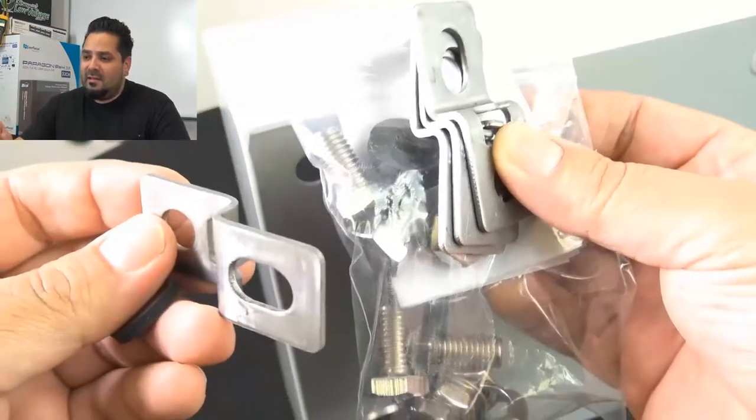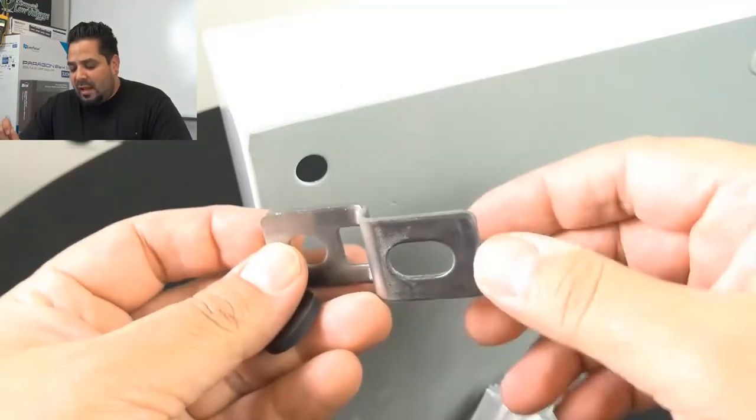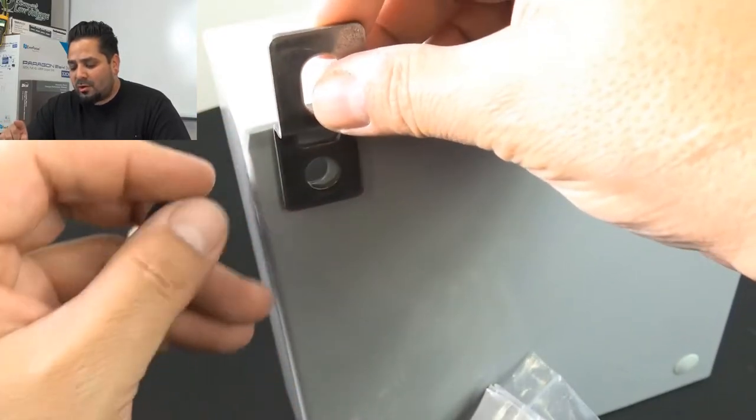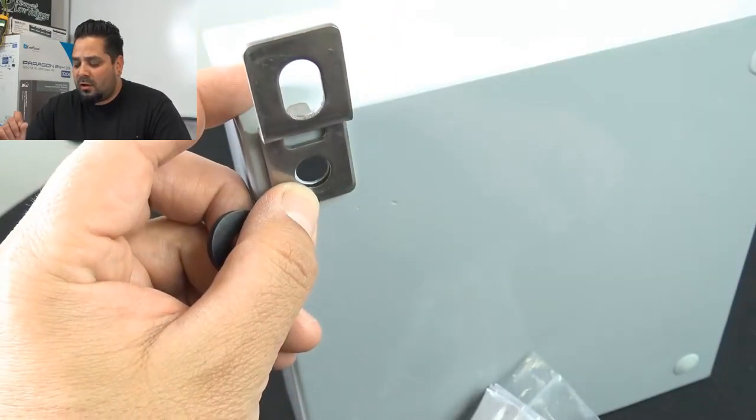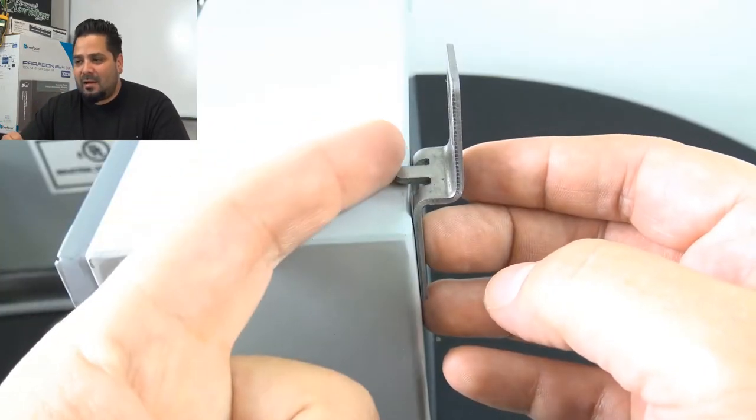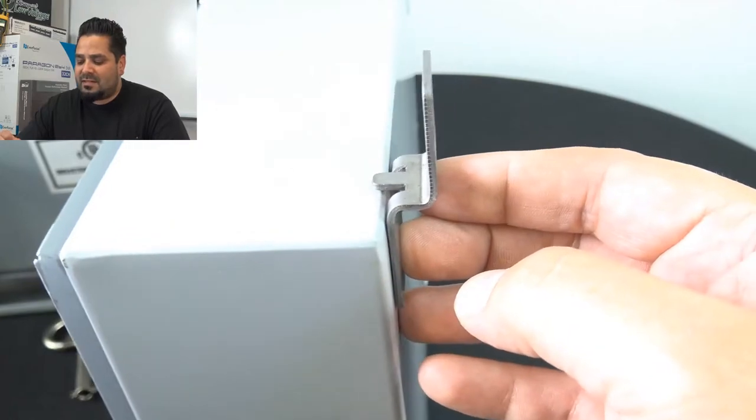Those pop out for the mounting brackets. The brackets, they do include that little rubber, that black washer. So that way, it'll enhance water resistance seal. You'll get a nice seal on the back. They'll keep that NEMA, that IP65 and 66 rating.